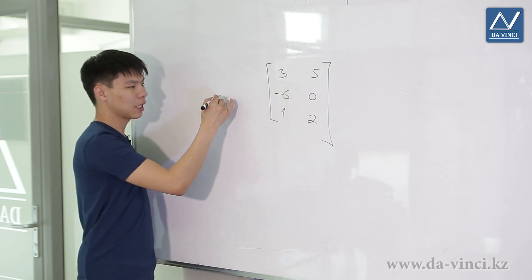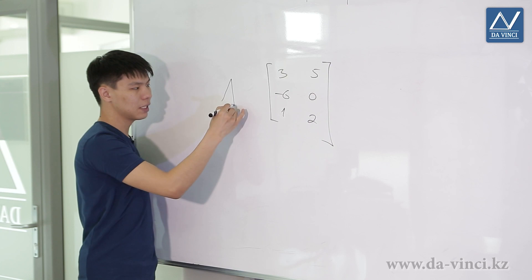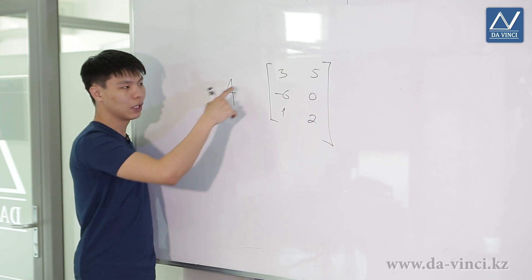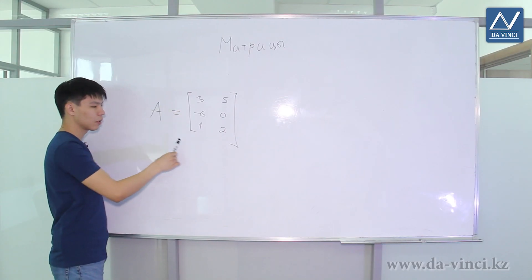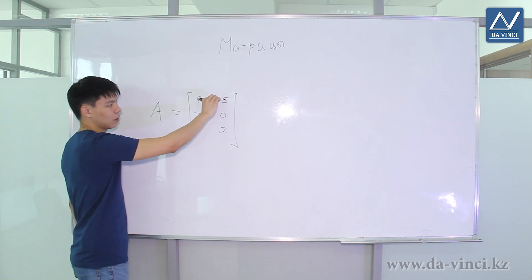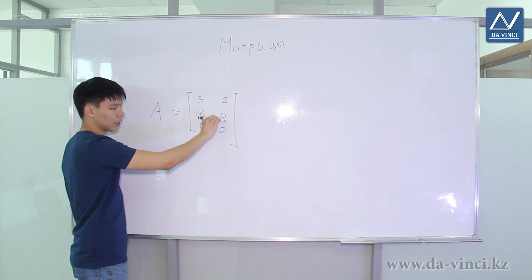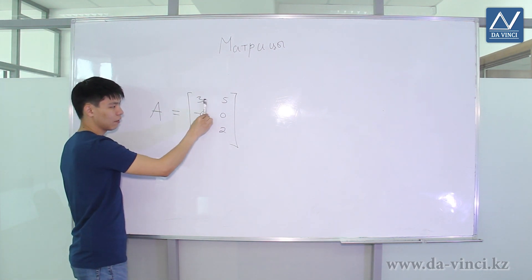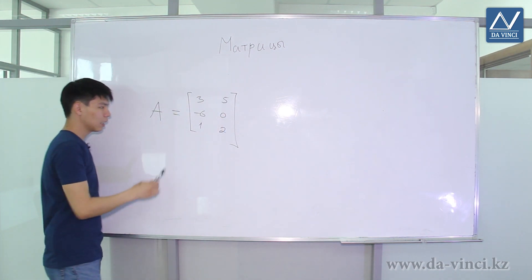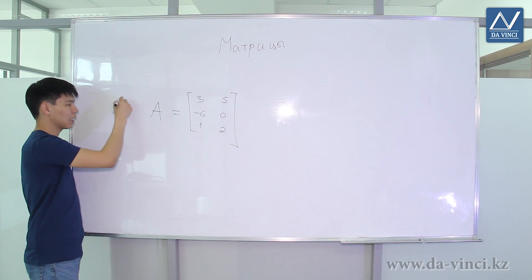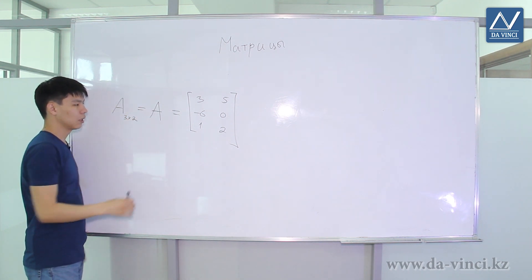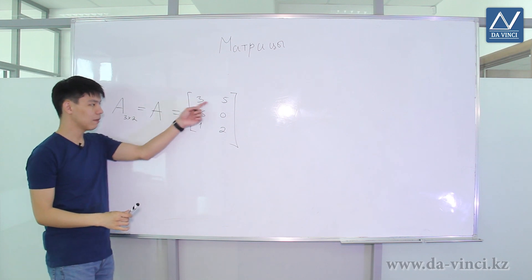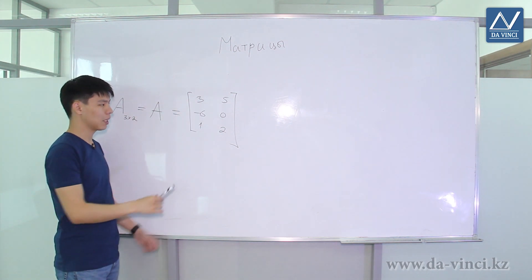This is a matrix. As a rule, the matrix is designated with a capital Latin letter — we have matrix A. Pay attention to this matrix: it has three rows and two columns. We can designate this matrix as A with size 3 by 2. These numbers are elements of the matrix.